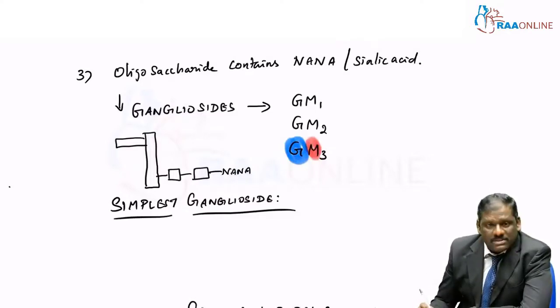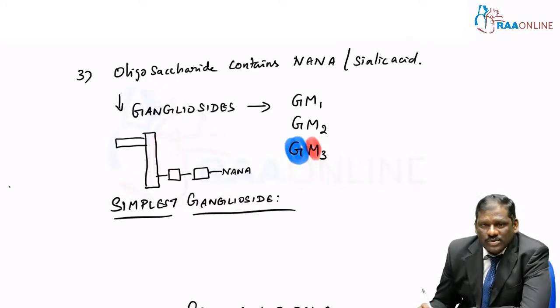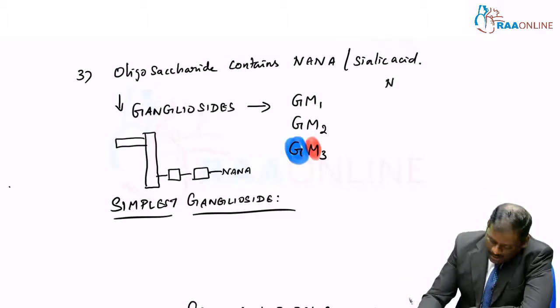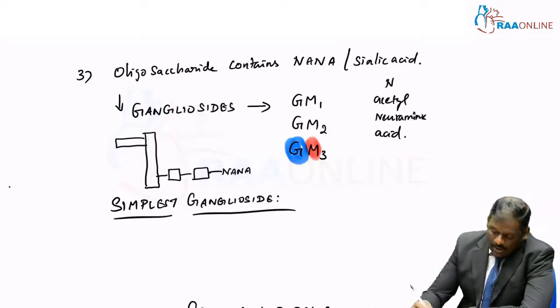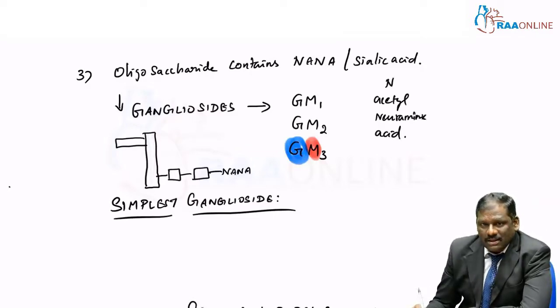What is this M? M stands for monosialic acid, otherwise called as the sialic acid or N-acetylneuraminic acid. This is the sialic acid.